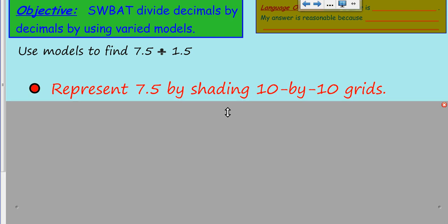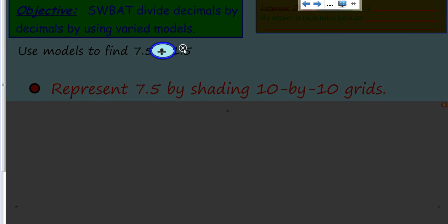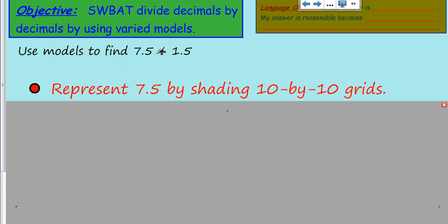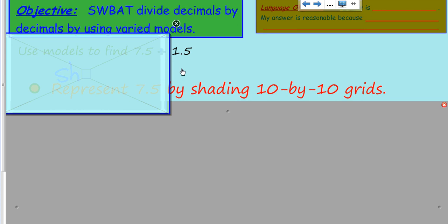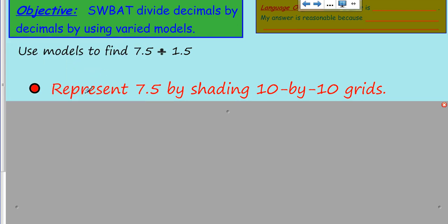We're going to look at using models to find seven and five tenths divided by - this is a divided by sign, it looks really kind of funky - one and five tenths. So it asks us to represent, which means show, 7.5 by shading 10 by 10 grids, and that's what we're going to do.